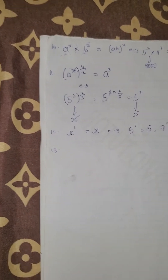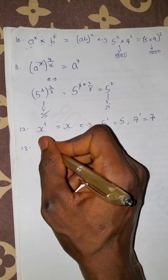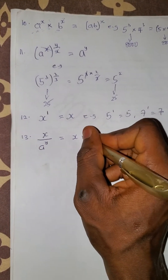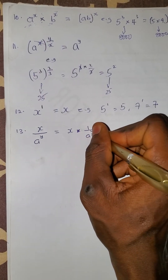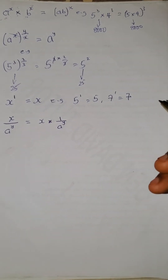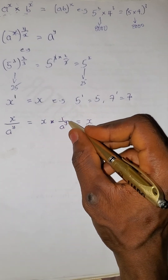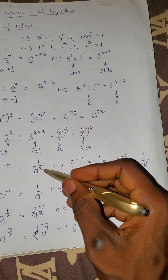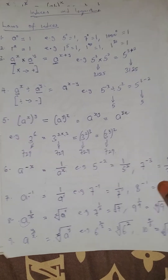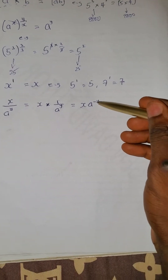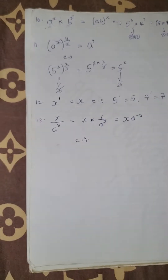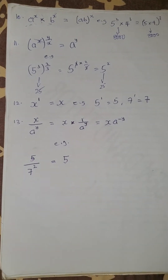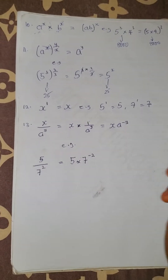Law 13: if you have x over a raised to the power y, this becomes x multiplied by 1 over a raised to the power y. And since 1 over a raised to the power y equals a raised to the power minus y, the result is x multiplied by a raised to the power minus y. For example, 5 over 7 raised to the power 2 becomes 5 multiplied by 7 raised to the power minus 2.